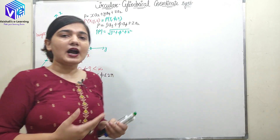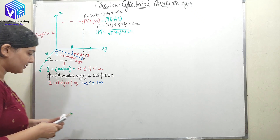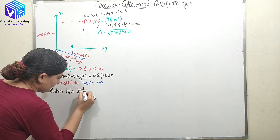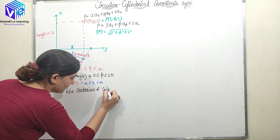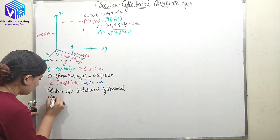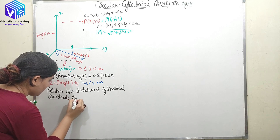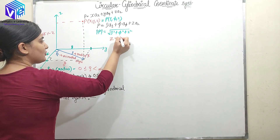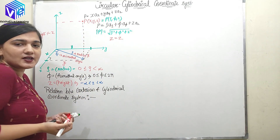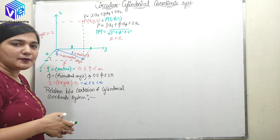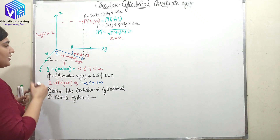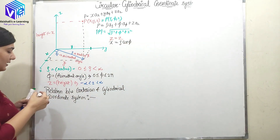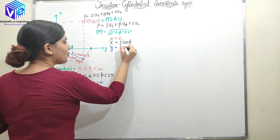Now we'll see the relationship between the Cartesian coordinate system and the cylindrical coordinate system. Z equals z — z is the same in both systems. If I talk about x, it is given as x = rho·cos(φ). And y is given as y = rho·sin(φ).